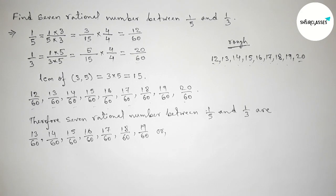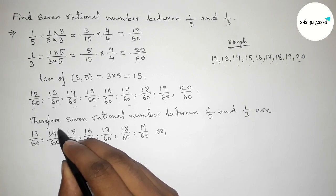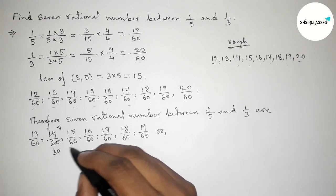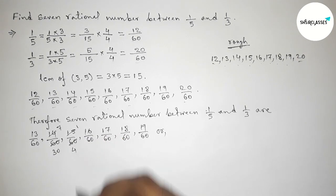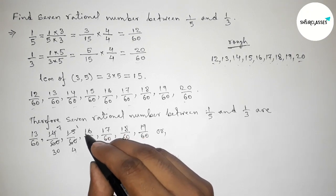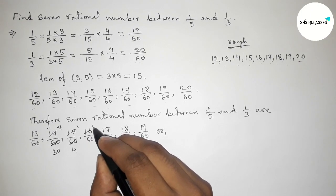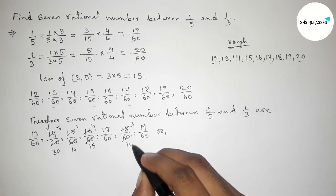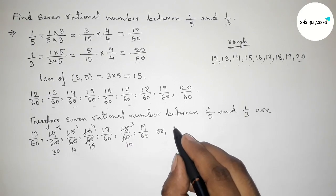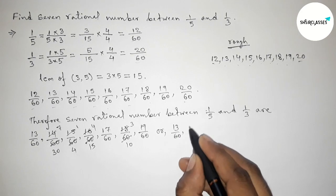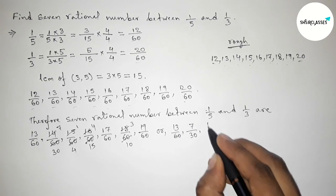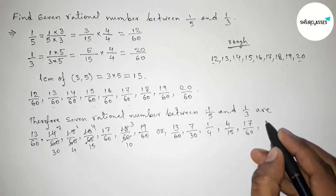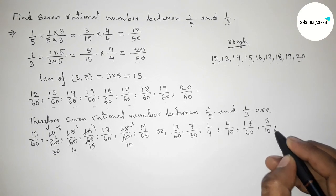So the required 7 rational numbers are: 13 by 60, 7 by 30 (which is 14/60 divided by 2), 1 by 4 (which is 15/60 divided by 15), 4 by 15 (which is 16/60 divided by 4), 17 by 60, 3 by 10 (which is 18/60 divided by 6), and 19 by 60.